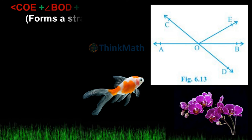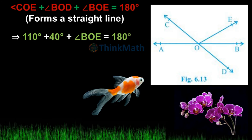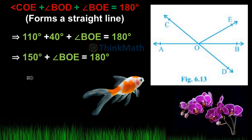Also, angle COE plus angle BOD plus angle BOE equal to 180° (forms a straight line). So 110° plus 40° plus angle BOE equal to 180°. Therefore 150° plus angle BOE equal to 180°, giving angle BOE equal to 30°.